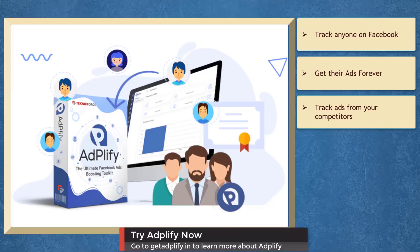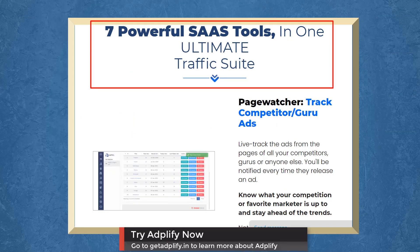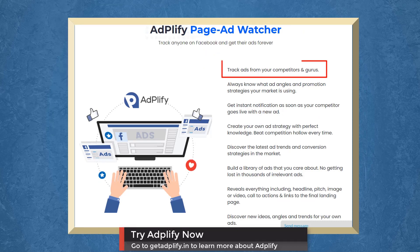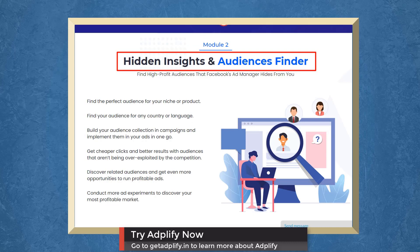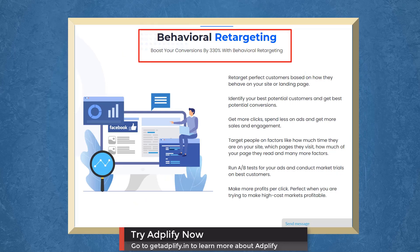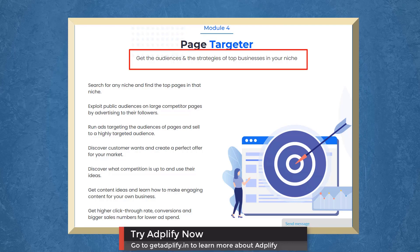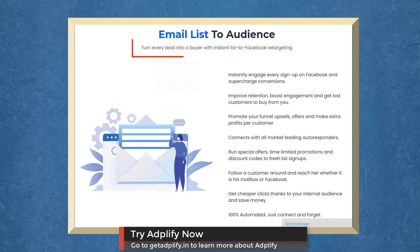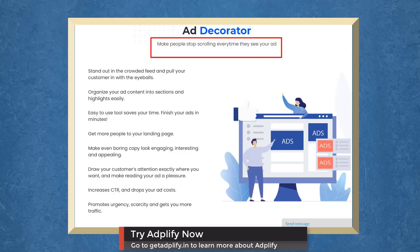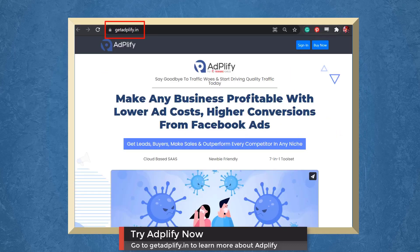We have a marketing app that allows you to track ads from your competitors. Adplify gives you seven popular SaaS tools for total Facebook ads domination. With Page Ad Watcher, you can track ads from your competitors. With Hidden Insights and Audiences Finder, you can find high-profit audiences that Facebook Ad Manager hides from you. Boost your conversions with Behavioral Retargeting. With Page Targeter, you can get the audiences and strategies of top businesses in your niche. With Email List to Audience, you can turn every lead into a buyer with Instant List to Facebook Retargeting. With Ad Decorator, you can make people stop scrolling every time they see your ad. With ROI Calculator, scale your ad's profitability without paying first. Try Adplify now — go to GetAdplify.in.